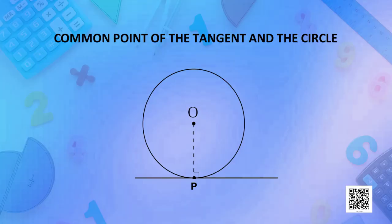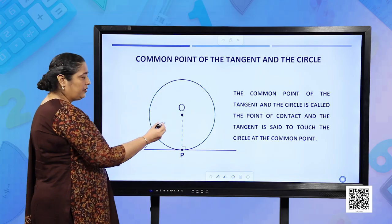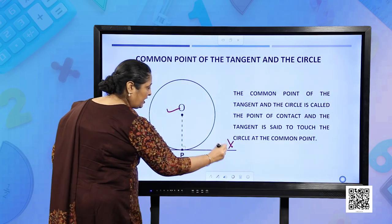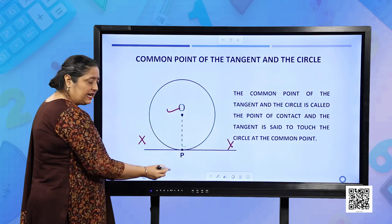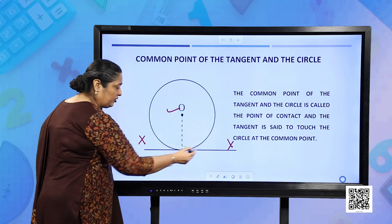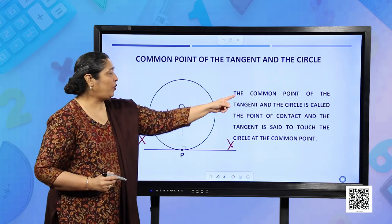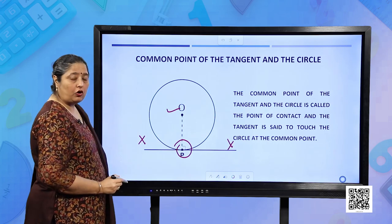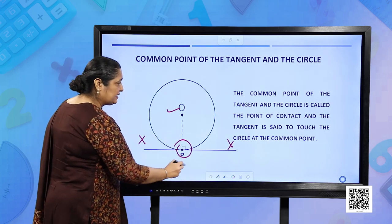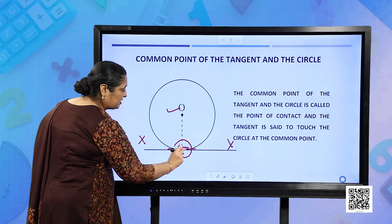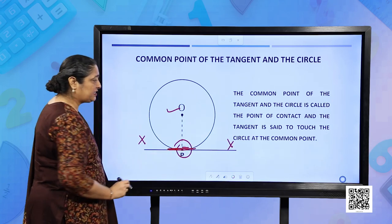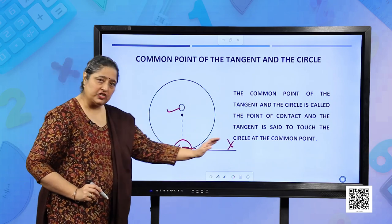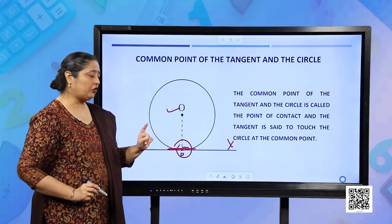The common point of the tangent and the circle: here we have a circle with center O and a tangent XY. Point P is where the circle and the tangent are touching. The common point of the tangent and the circle is called the point of contact, and the tangent is said to touch the circle at this common point P.